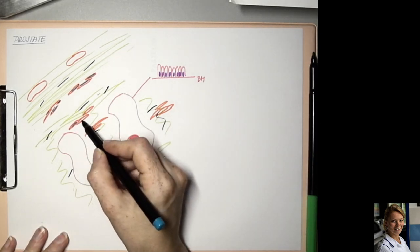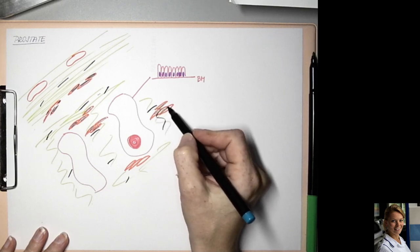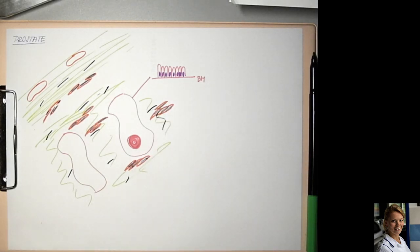So nuclei of these smooth muscle cells. This is a stroma called fibromuscular stroma. So now we label it as a scheme.